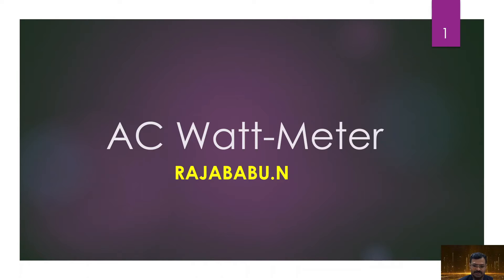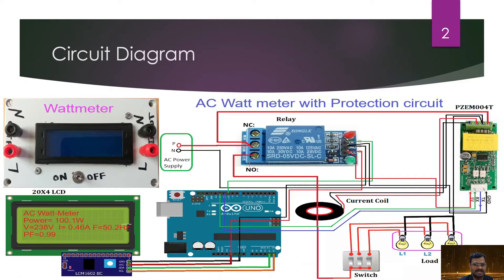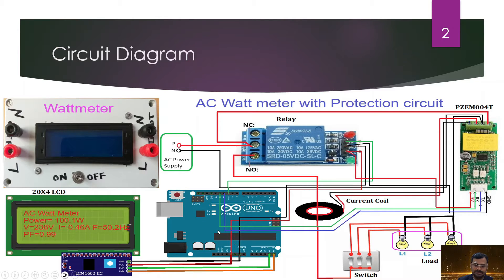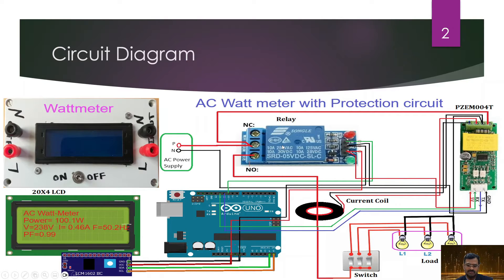Let us get into the project. The circuit diagram shown here is almost the same as circuits I have given earlier for load protection. We have an Arduino Uno, though you can use any other Arduino board. If you want a compact design you can use smaller Arduino boards. We also have a relay, which is going to act as the isolating device in case of any abnormal conditions like over current, over voltage, or under voltage.